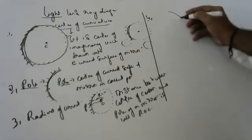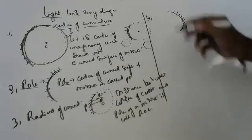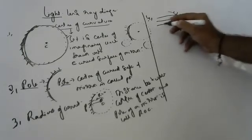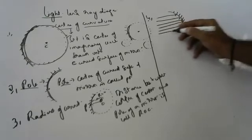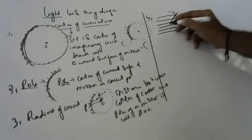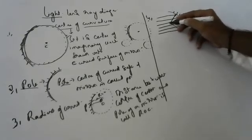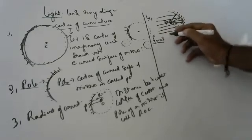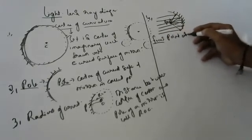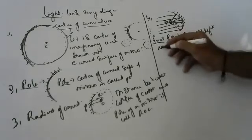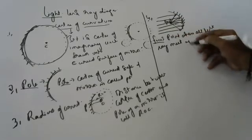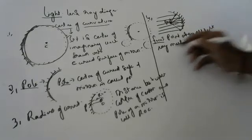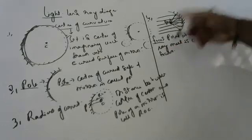Now, if this is a mirror, all light rays coming from a distant object hit it and undergo reflection — they all meet at one point. The point where all light rays meet after reflection or refraction is called the focus.